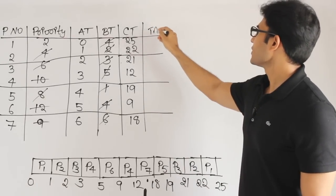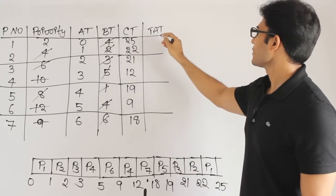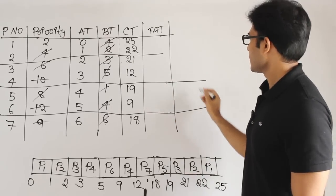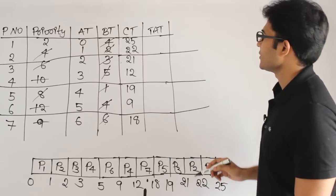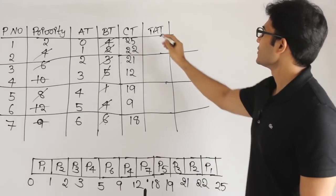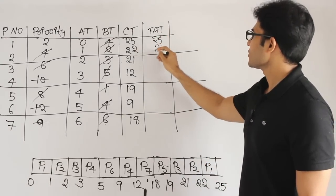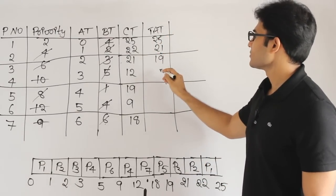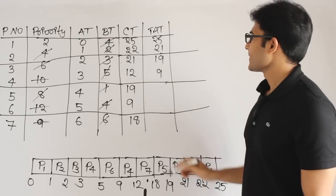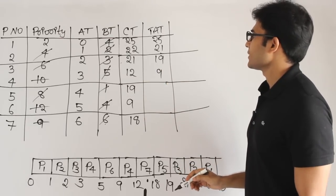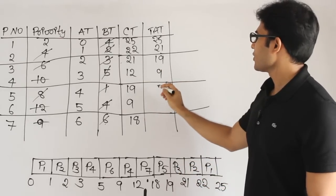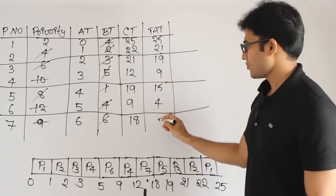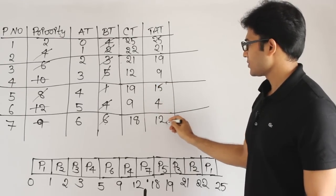After finding completion time, we can find turnaround time. Turnaround time is completion time minus arrival time. So the turnaround times are: P1=25, P2=21, P3=19, P4=9, P5=15, P6=4, P7=12.